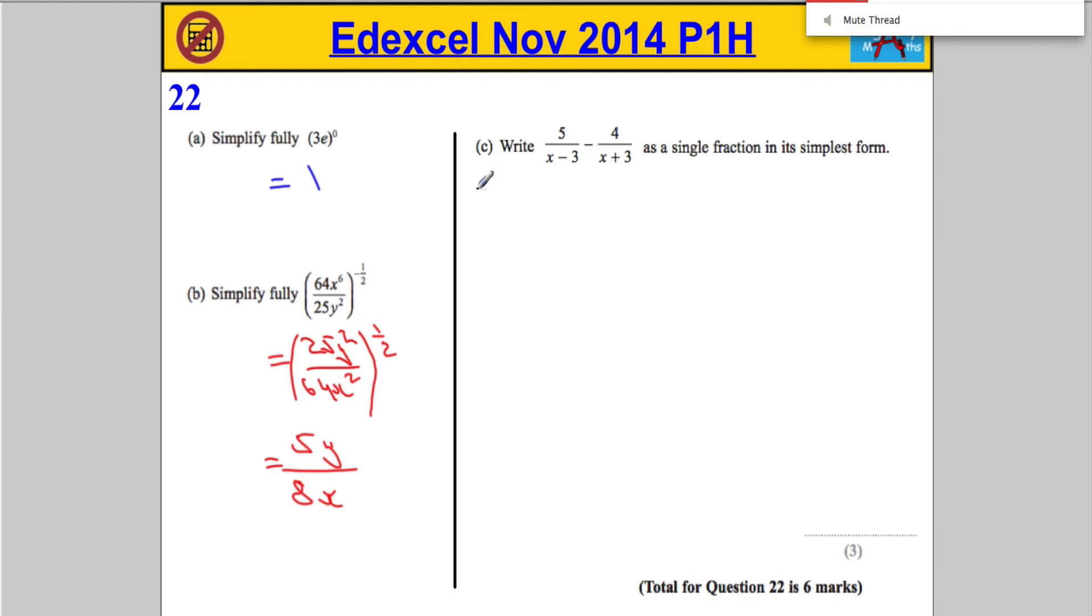Okay, part C. Write 5 over x minus 3 minus 4 over x plus 3 as a single fraction in its simplest form. Okay, now normally when we add or subtract fractions with different denominators, we find a common denominator.